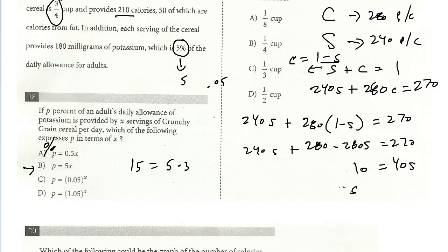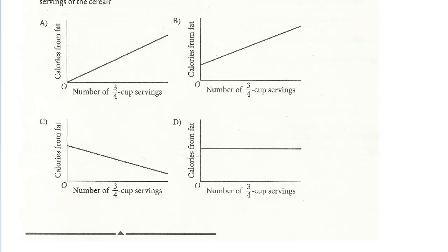And so we get s equals 10 over 40, which is one fourth. And again, if you were able to recognize that early on, you could have saved a little bit of time. I think there's just one more question on the next page. I'm going to do this in this video because it relates to this information. So let's do number 20 as well.